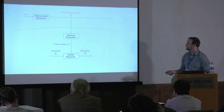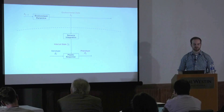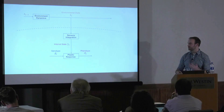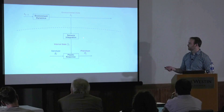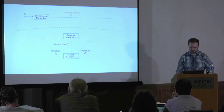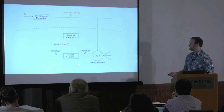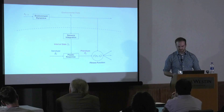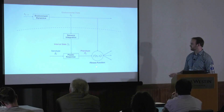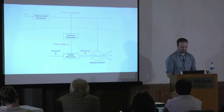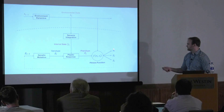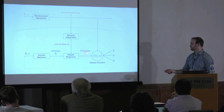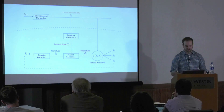This internal state is a product of some sensory integration process — maybe a signal transduction cascade, maybe a neuronal circuit — that's encoding something about the environment internally. And then the organism has some fitness that's a function of its phenotype and its matching to the environmental state. This dictates how many offspring this organism contributes to the next generation, along with its genotype, which may mutate in the process. And the cycle continues — we have natural selection acting in this system.